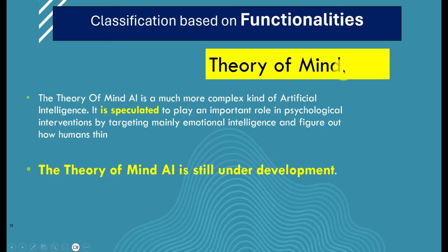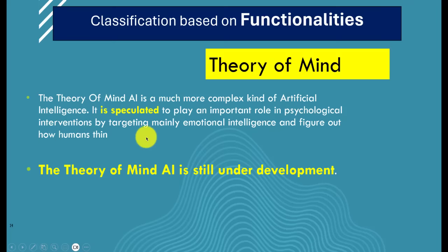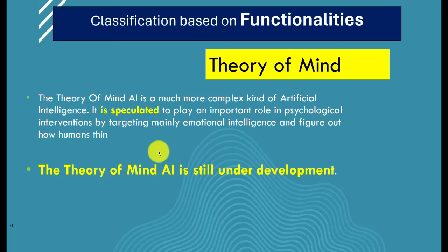Theory of Mind AI is still far out there — a hypothetical concept still under development. It is speculated to play an important role in psychological interventions by targeting emotional intelligence and figuring out how humans think. The idea is that an artificial intelligent entity would be able to read your mind and understand emotional intelligence.